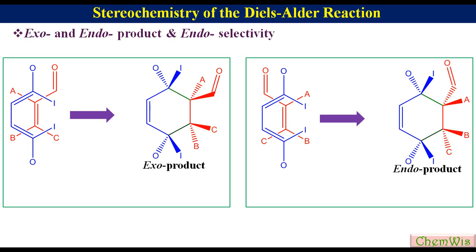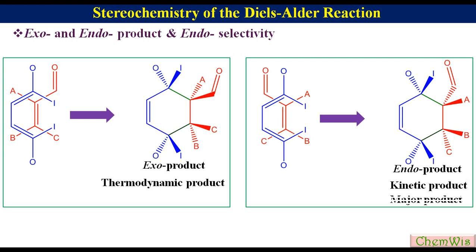Exo-product is thermodynamically more stable than endo-product. Endo-product is formed at a faster rate than exo. So exo is the thermodynamic product while endo is the kinetic product. This is because the transition state for endo is more stable than exo, so we get endo-product as the major product.